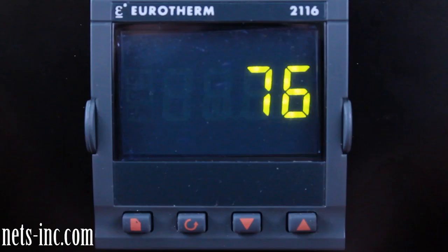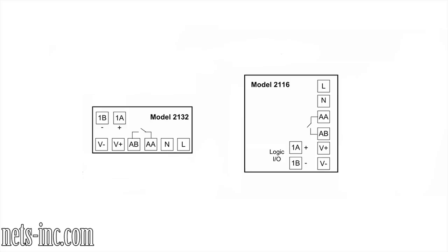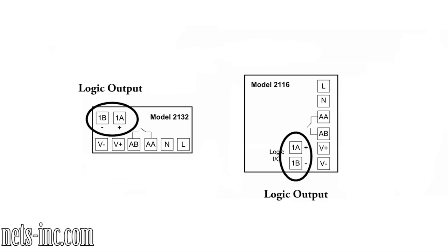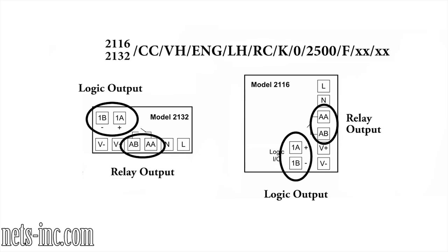This video tutorial will demonstrate the basic operations level setup of a Eurotherm 2132 or 2116 controller. The 2132 or 2116 controller is a fixed hardware configuration instrument, meaning it comes standard with a logic output on terminals 1A and 1B, and a relay output on terminals AA and AB. For this demonstration, we will consider it set up as a heat/cool controller, with the logic output as the heating output and the relay output as the cooling output, and the process input will be a Type K thermocouple in degrees Fahrenheit.